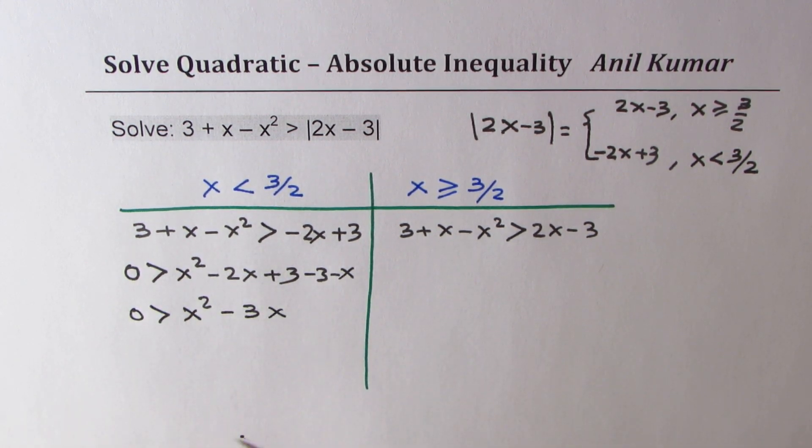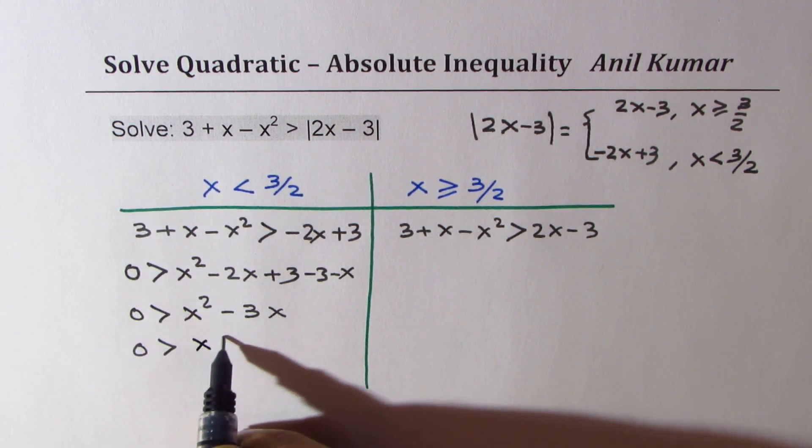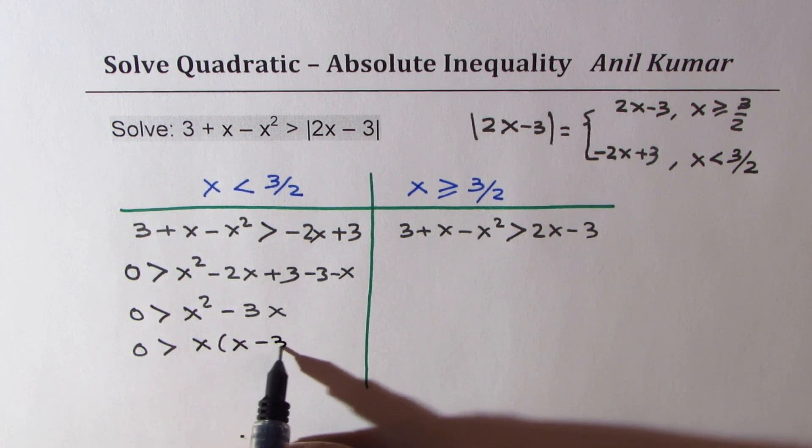Now that gives us 0 is greater than x squared minus 3x. You can factor this, that means 0 is greater than x times x minus 3.